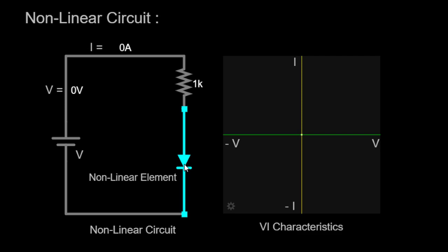VI Characteristics of a Diode. When we analyze the behavior of a diode, we often refer to its voltage current characteristics, commonly known as VI characteristics. These characteristics describe how the diode responds to changes in voltage across its terminals. By observing the VI characteristics, we can gain insights into the diode's behavior within a circuit.